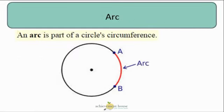So some review. An arc is part of a circle's circumference. From A to B, instead of going from A all the way around the perimeter of the circle, or the circumference, I'm only going part of the way.